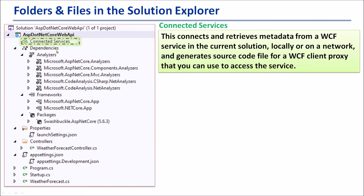The first item is Connected Services. This connects and retrieves metadata from a WCF service in the current solution, locally or on a network, and generates a source code file for a WCF client proxy that you can use to access the service. By using Connected Services, we can discover WCF services.